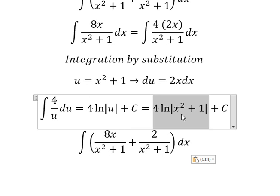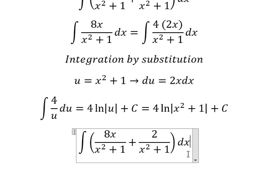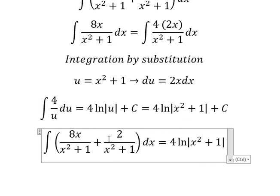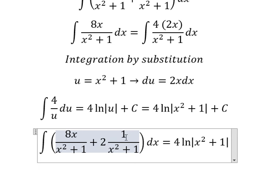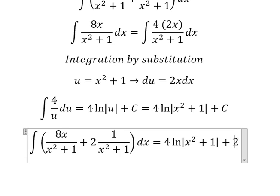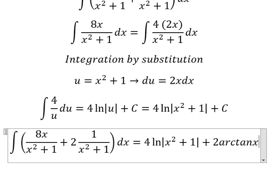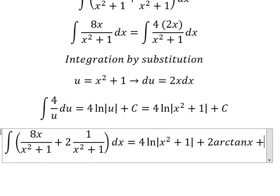For this one, we can put number 2 out here. The integration of 1 over x square plus 1, we have arctan of x, and I will put c.